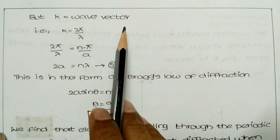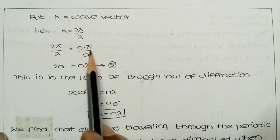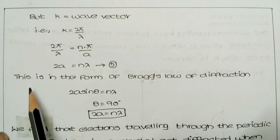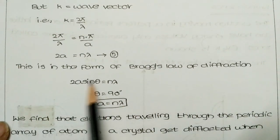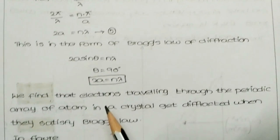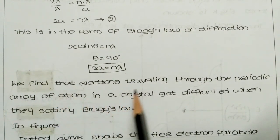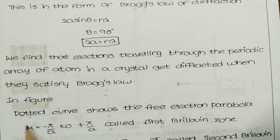According to modern theory, k is the wave vector, that is k = 2π/λ. Now equating 2π/λ with nπ/a gives 2a = nλ, which is equation number 5. This is in the form of Bragg's law of diffraction. Bragg's law is 2d·sinθ = nλ, but here 2a·sinθ = nλ. When θ = 90°, 2a = nλ. We find that electrons traveling through a periodic array of atoms in a crystal get diffracted when they satisfy Bragg's law.